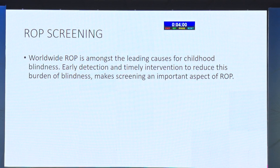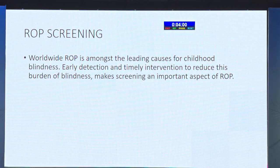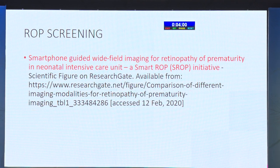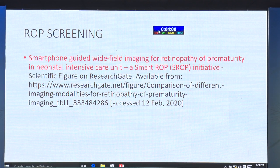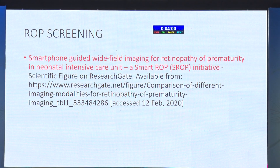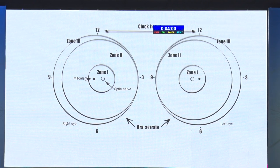Worldwide ROP is among the leading causes of childhood blindness, and early detection with timely intervention makes screening a critical aspect of ROP management - not only diagnosis but timely treatment, because the earlier you diagnose, the earlier you treat, and that is how you save a child from going blind. Nowadays we have smartphone-guided imaging with many published papers on this. But unless the resident knows what ROP is, how to screen, and how to document, they cannot even use these devices.